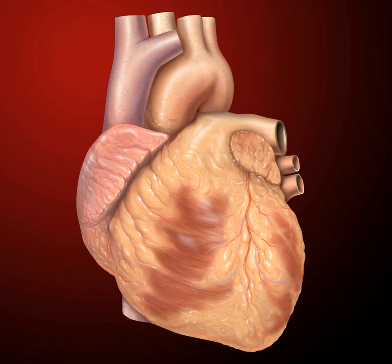The heart functions as a pump in the circulatory system to provide a continuous flow of blood throughout the body. This circulation consists of the systemic circulation to and from the body and the pulmonary circulation to and from the lungs. Blood in the pulmonary circulation exchanges carbon dioxide for oxygen in the lungs through the process of respiration. The systemic circulation then transports oxygen to the body and returns carbon dioxide and relatively deoxygenated blood to the heart for transfer to the lungs.